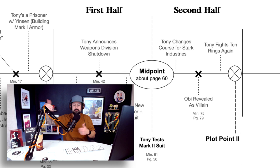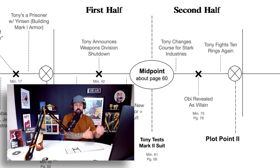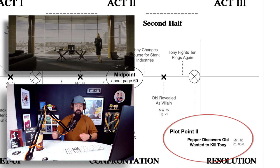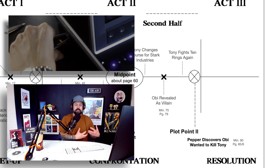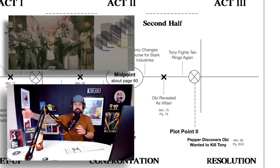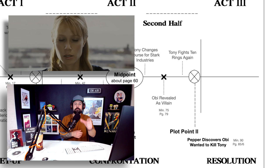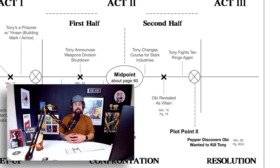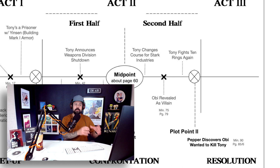After Obadiah is revealed as the villain, Tony sees a news story where the remaining 10 rings are terrorizing a small town. Tony takes the Iron Man suit — the Mark 2 he's just built — flies all the way out to Afghanistan and fights the 10 rings soldiers. That's one of the best fight scenes in the MCU. That sequence leads up to the end of act two and plot point two: Pepper downloads data and discovers that Obadiah had hired the 10 rings and paid them to kill Tony.